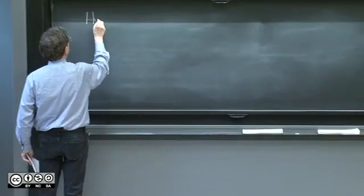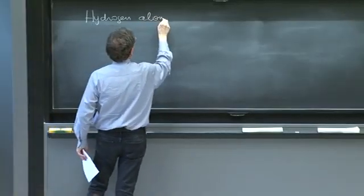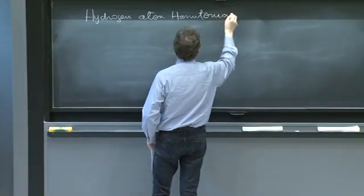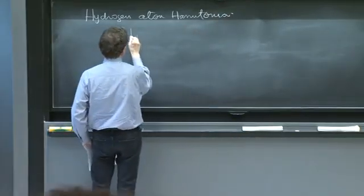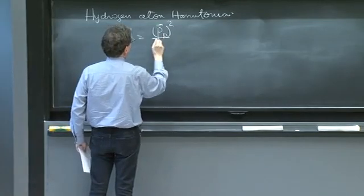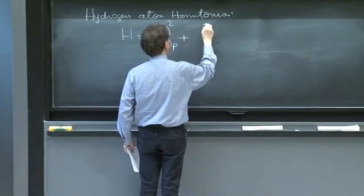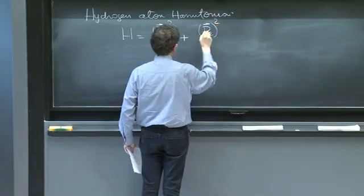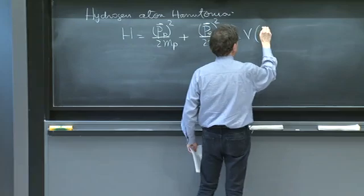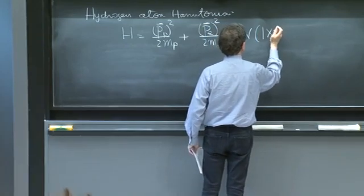We had a hydrogen atom Hamiltonian that was given by the kinetic operator for the proton plus the kinetic operator for the electron, plus the potential, which was a function of the distance between the proton and the electron.